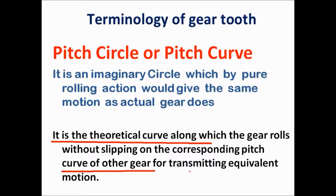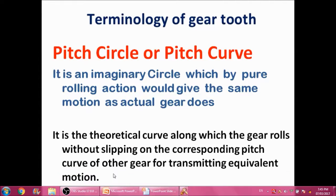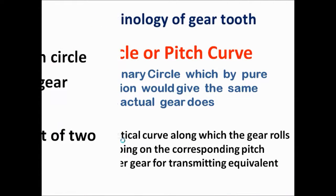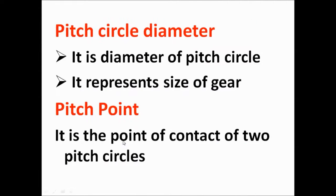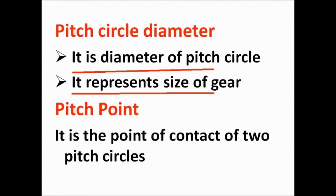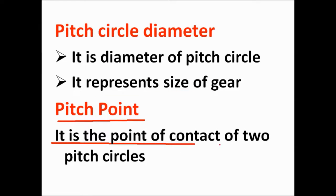Then we move to the next term: pitch circle diameter. Pitch circle diameter is the diameter of the pitch circle; it represents the size of the gear. Next is pitch point — it is the point of contact of the two pitch circles of two different gears.